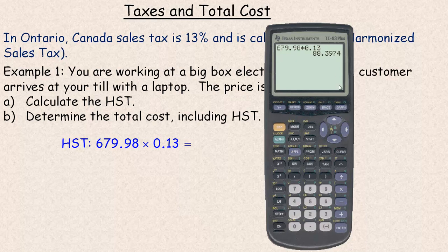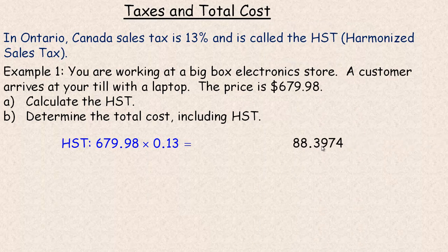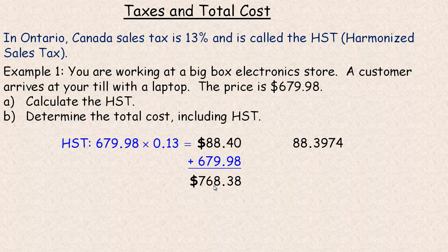The amount is 88.3974 — that's the HST, the tax amount. Since this is money, we have to round to the nearest cent, so we need two decimal places. The 7 here is 5 or larger, so it makes the 39 cents round up to 40, giving us $88.40. To get the total cost, we add that to the original $679.98 sticker price on the laptop and we get $768.38.